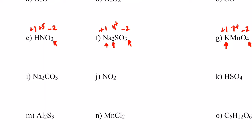For letter i, Na2CO3: oxygen is negative two, and three oxygens give six negatives. Sodium is positive one; two sodiums give two positives, so carbon must be positive four. Carbon is in group 14, so positive four is possible. For letter j, NO2: oxygen is negative two, and two oxygens give four negatives, so nitrogen must be positive four.